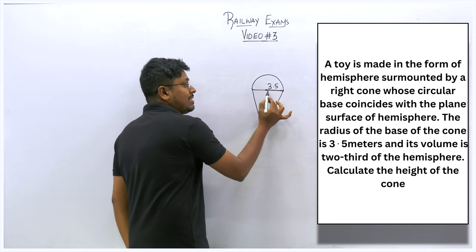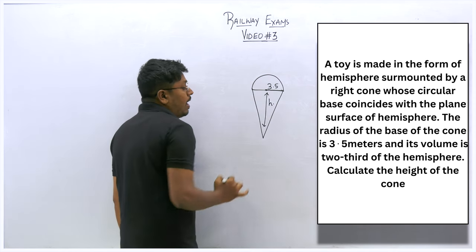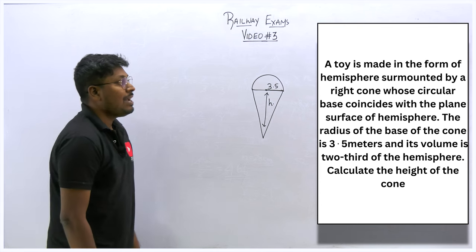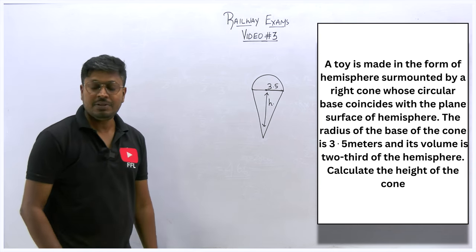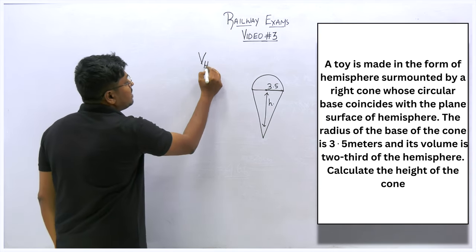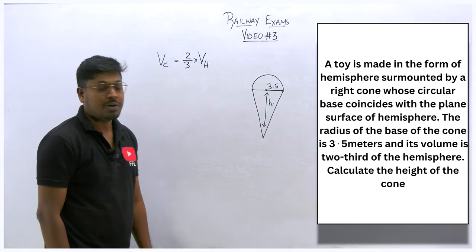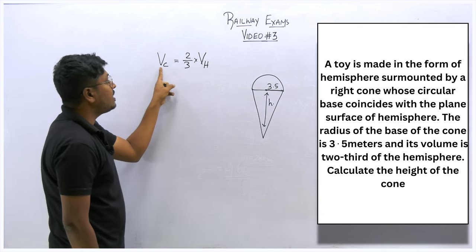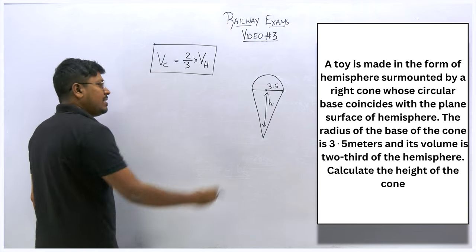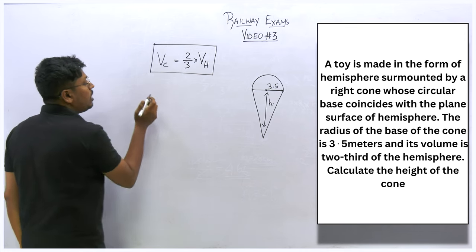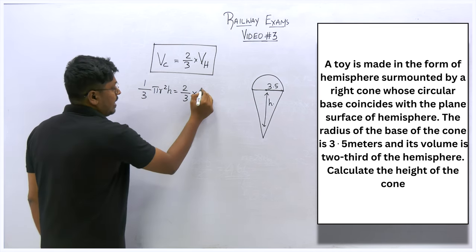The volume of the cone equals two-thirds of the volume of the hemisphere. So: volume of cone = (2/3) × volume of hemisphere, meaning 1/3 πr²h = (2/3) × (2/3 πr³). Our target is to find the height of the cone using this relationship.